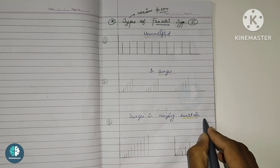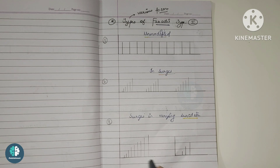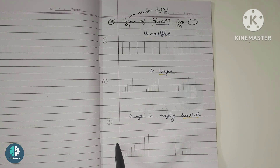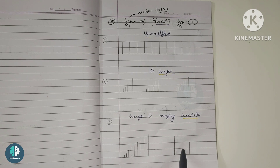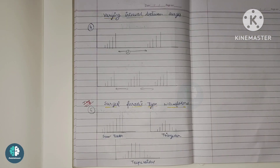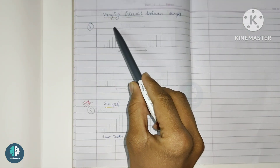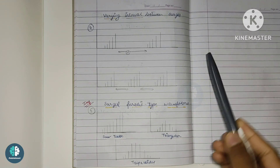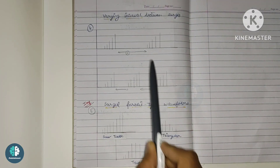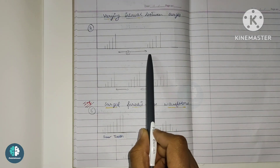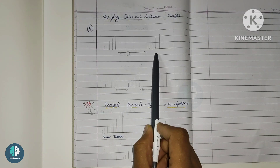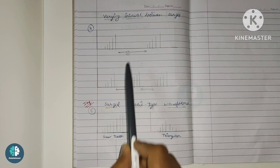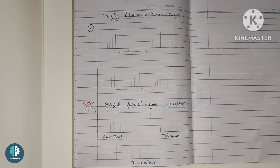Next is surges with varying duration. In the faradic current in surged mode, we can vary the duration. Plotting current against time, if we reduce the duration, we get two different types of waveforms: one where the duration is higher and one where it is lower, but both are still surged. We can also vary the intervals between the surges — here the interval is slightly higher, and here it is lower.